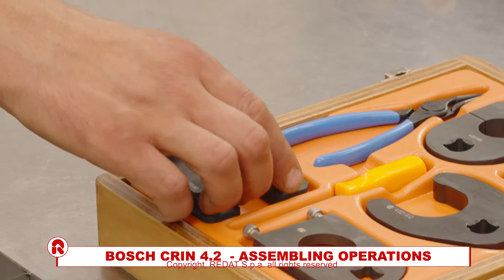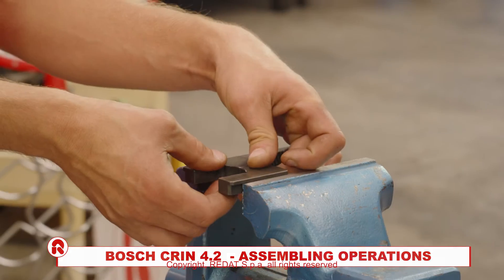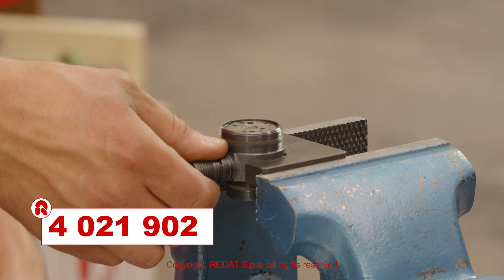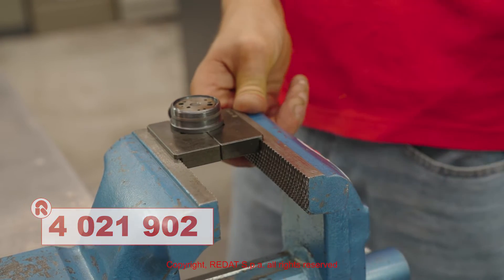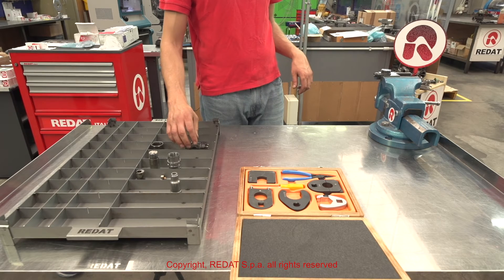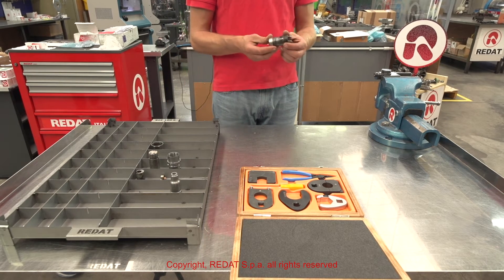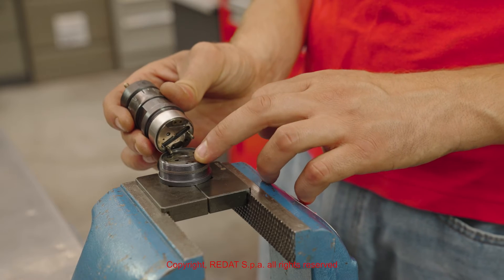We begin the reassembly procedure by tightening in the vise the holding block 4 0 2 1 9 0 2 and positioning the injector. We proceed by assembling the solenoid group.